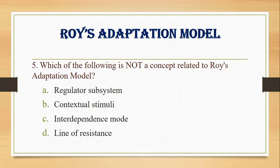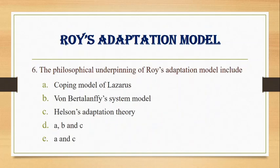Number 5. Which of the following is NOT a concept related to Roy's adaptation model? A. Regulator subsystem, B. Contextual stimuli, C. Interdependence mode, D. Line of resistance. Answer: D. Line of resistance.